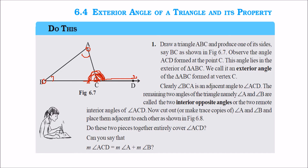If this is the exterior angle, the interior opposite angles will be like this. For example, if I extend AB, this will be the angle. So the interior opposite angles for this exterior angle will be these two. Similarly, for this angle, the interior opposite angles will be these two.